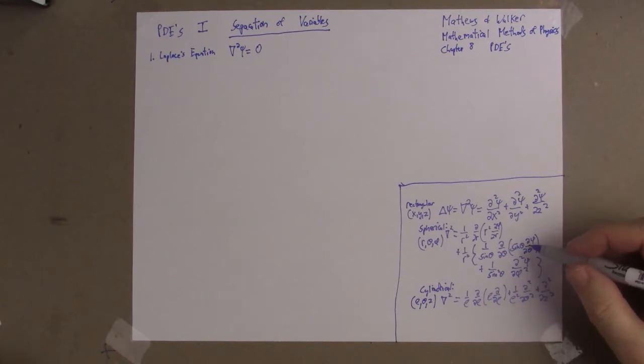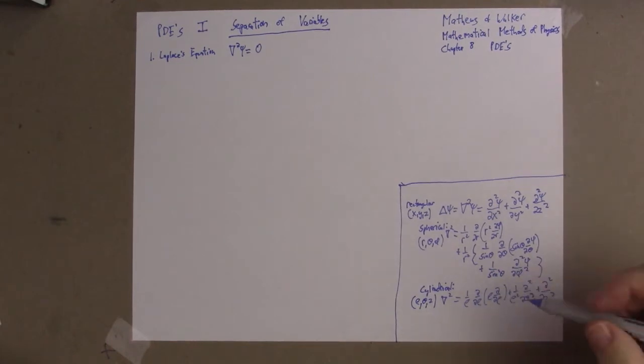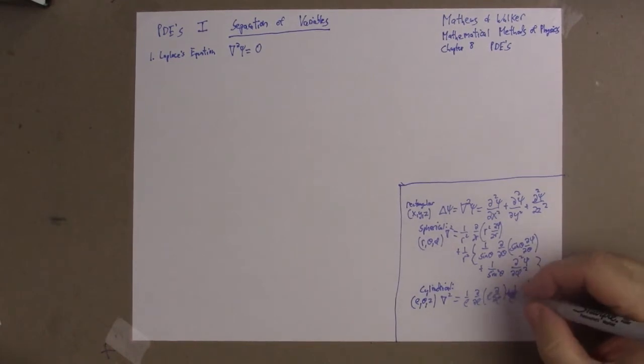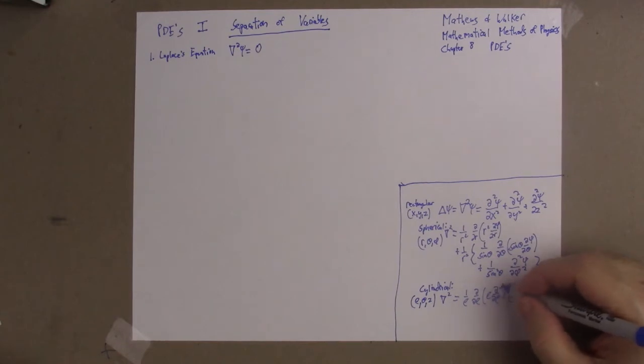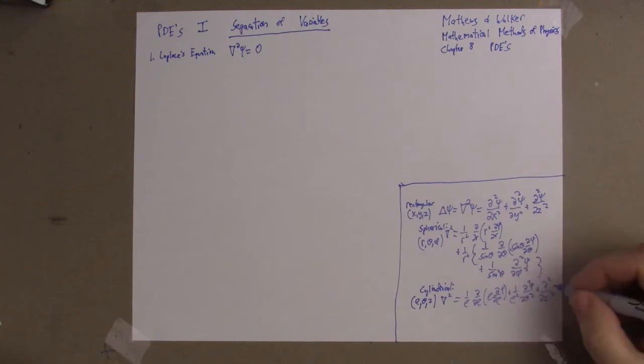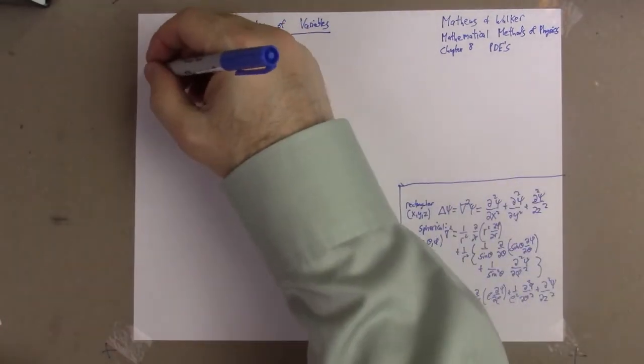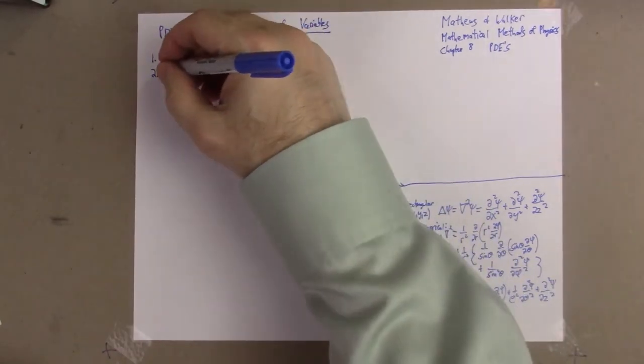In cylindrical coordinates using rho, theta, and z, del squared is 1 over rho times the partial with respect to rho of rho times the partial of psi with respect to rho, plus 1 over rho squared times the second partial of psi with respect to theta, plus the second partial of psi with respect to z.